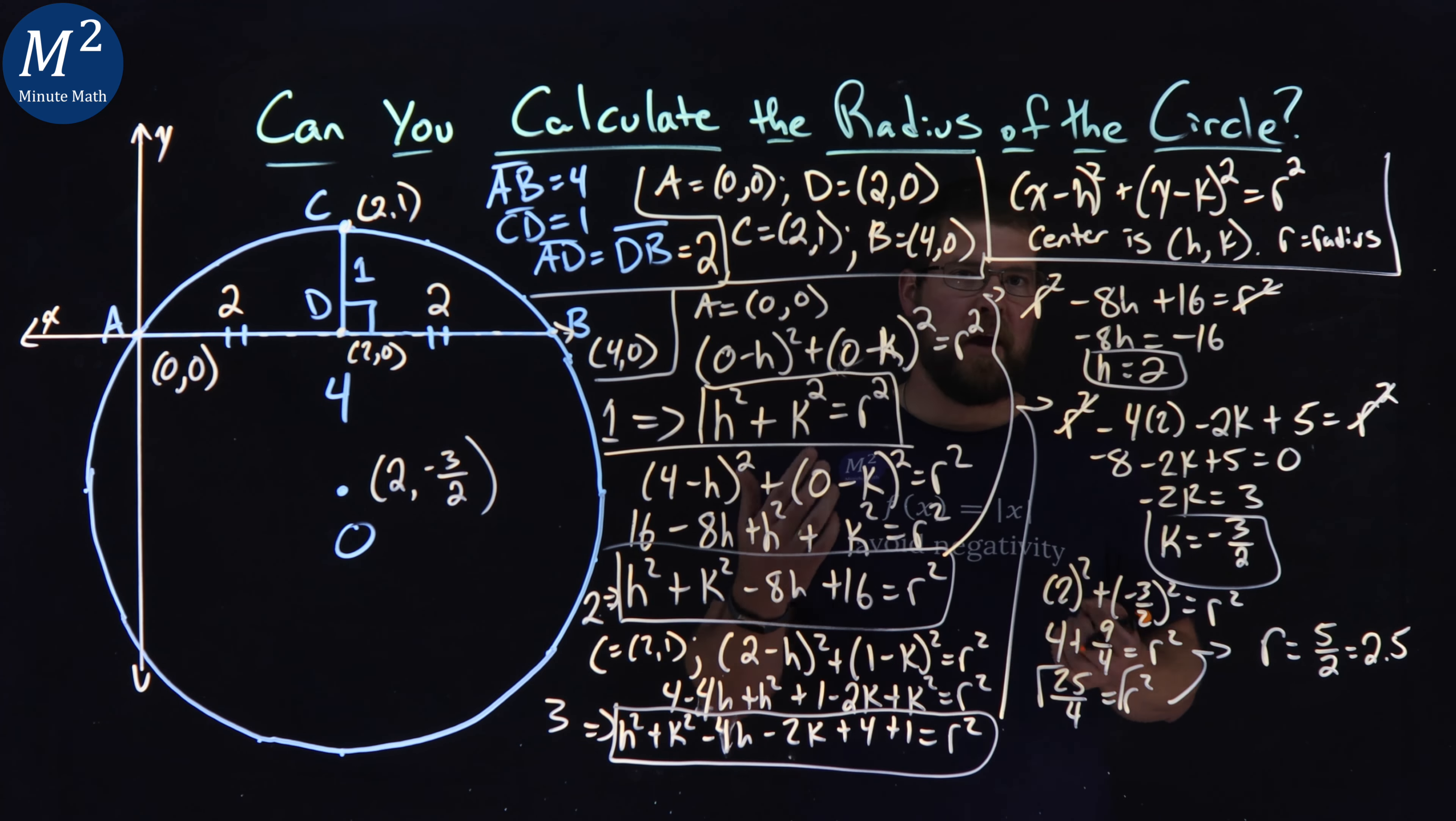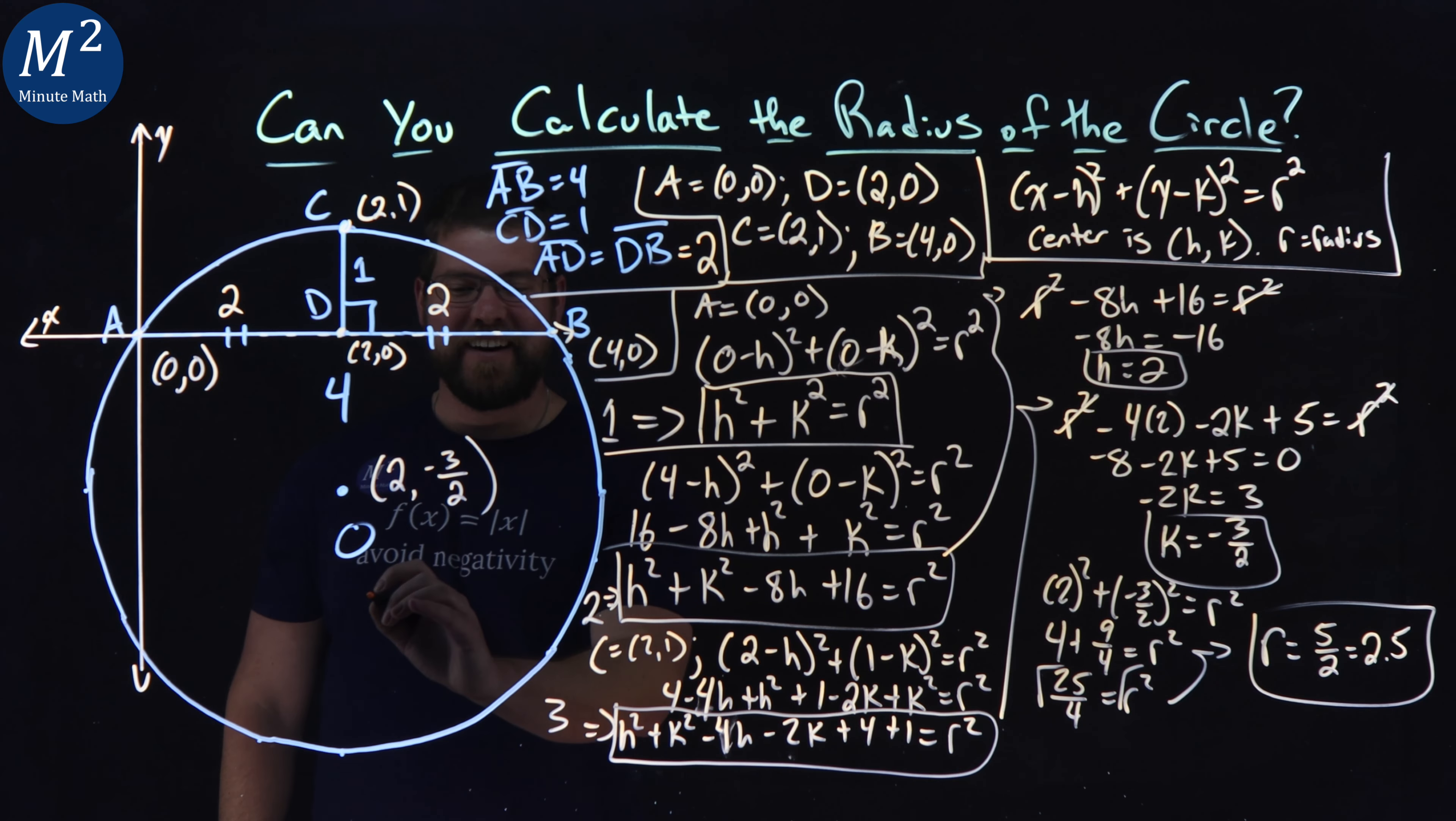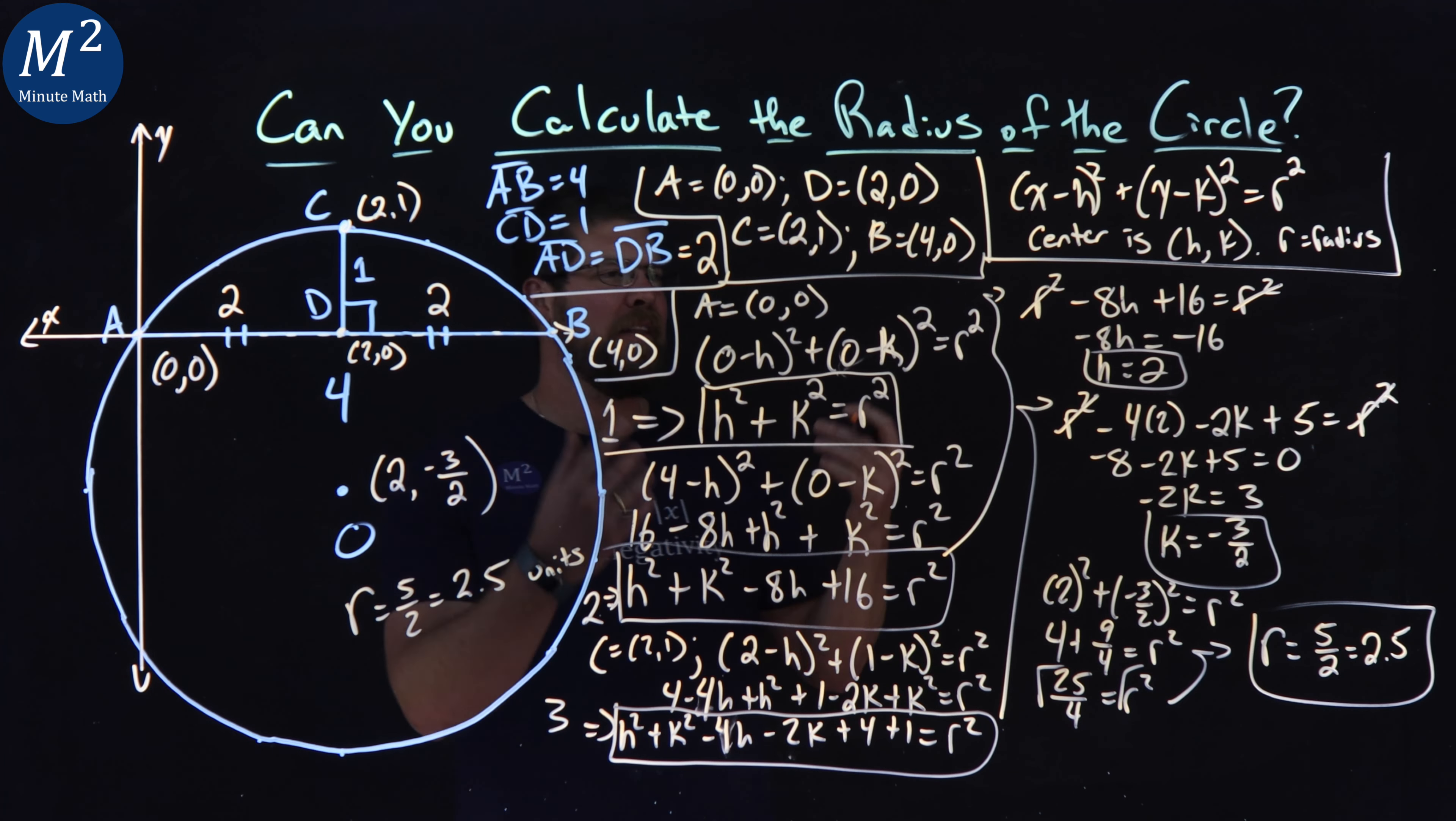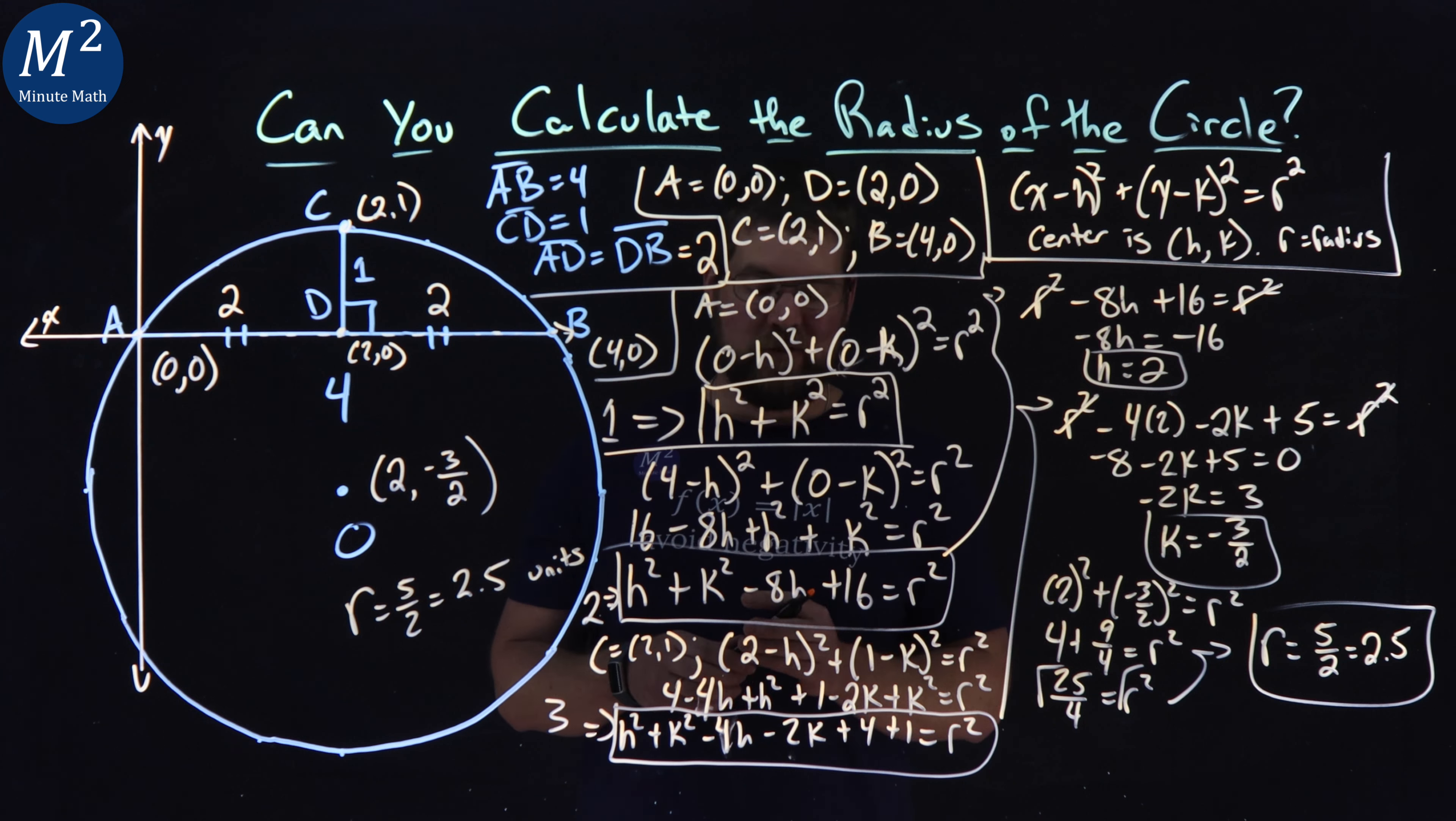So if R is five halves or 2.5 here, we can use that to find the area of the circle. Oh, no, we're done. Well, we could easily find the area circle, but I just need to find the radius. Got it. Went a little too far here. So R equals five halves or 2.5 and that's units. So the radius, I keep thinking I'll find the area, which we could find, right? Pi R squared, but we wanted just the radius here. So the radius of the circle is 2.5 units and we got our answer.